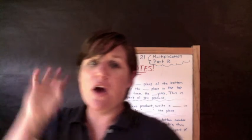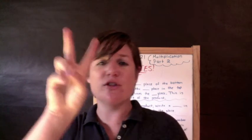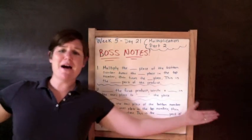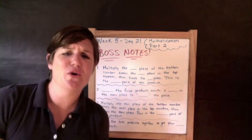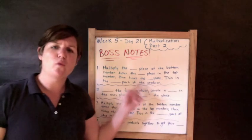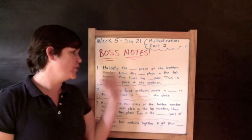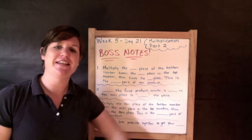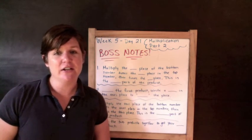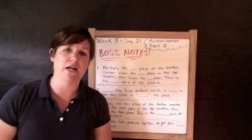Last week we worked on 4 digits times 1 digit, but this week we're going to work on 2 digits times 2 digits. Let's get to our boss notes! They're a little bit lengthy today. In your workbook, which you can download by clicking the link below, you are going to record and fill in the blank spaces. It's a little wordy, but it'll make more sense once we start putting this into practice.